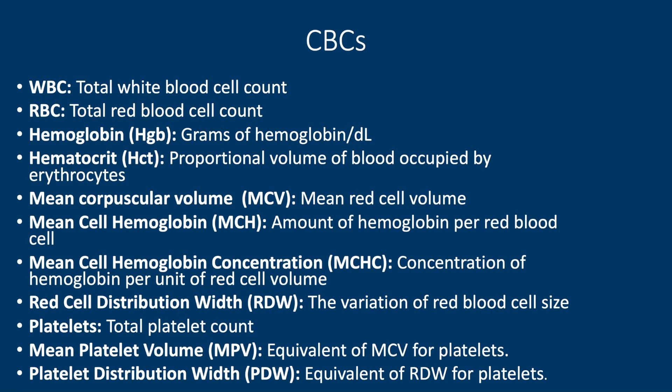Your red blood cell count is, similarly, your total red blood cell count. Your hemoglobin is grams of hemoglobin per deciliter. That's going to be an okay value to have even if you have a hemolytic specimen, because the machine actually hemolyzes to get there.